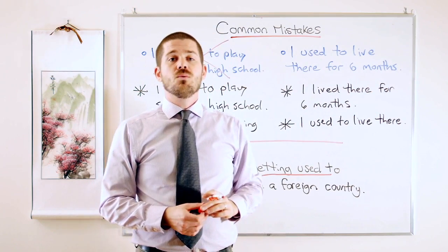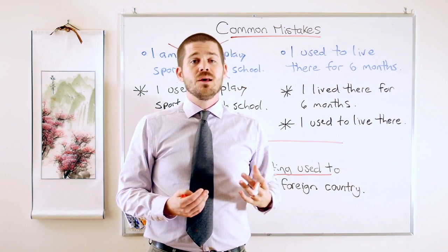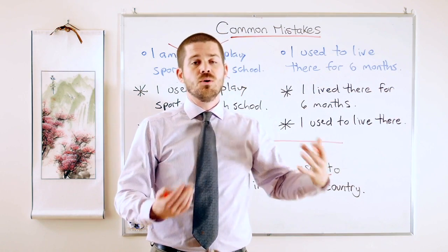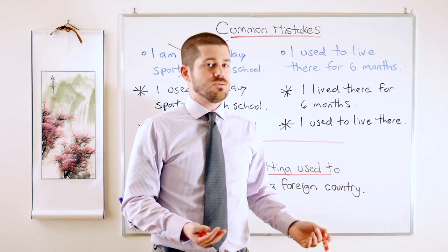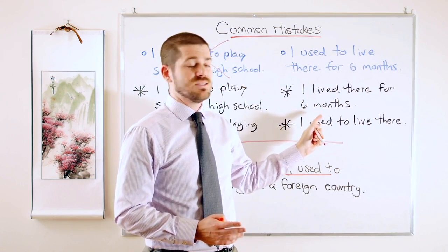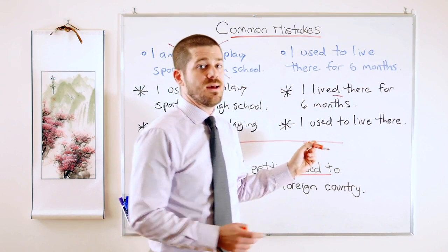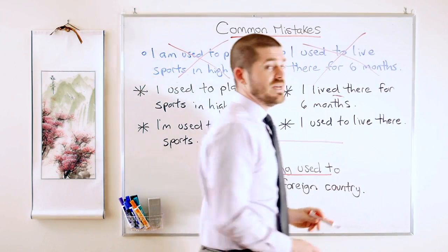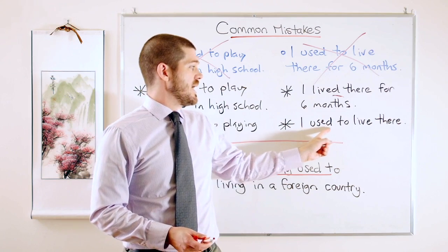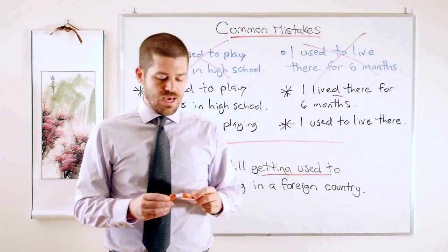The second mistake: 'I used to live there for six months.' When using 'used to' to express past habits, we cannot indicate how long — we can't say 'for six months' or 'for three years.' To express duration, use the simple past: 'I lived there for six months.' So 'I used to live there' is fine, but you cannot add 'for how long.'